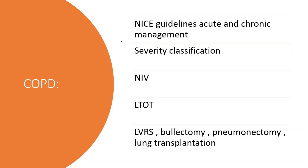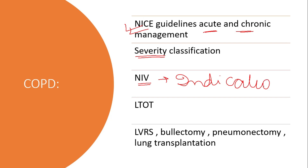The next topic is obstructive lung disease like asthma and COPD. You cannot enter the examination center without reading the NICE guidelines for COPD. You have to know about acute management and every aspect of chronic management. You have to know about the GOLD classification for severity and indications of NIV — very important. If you also prepare for NHS interviews, they will always ask about the indications of NIV in COPD. This is a very common question even for training and non-training job interviews, and of course very popular in MRCP.